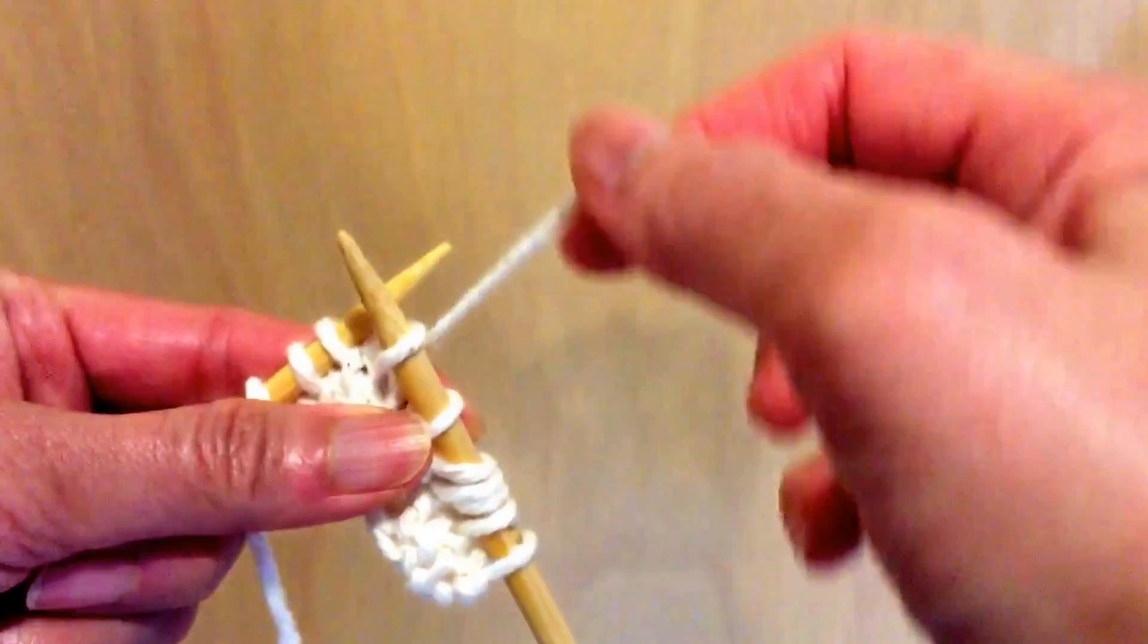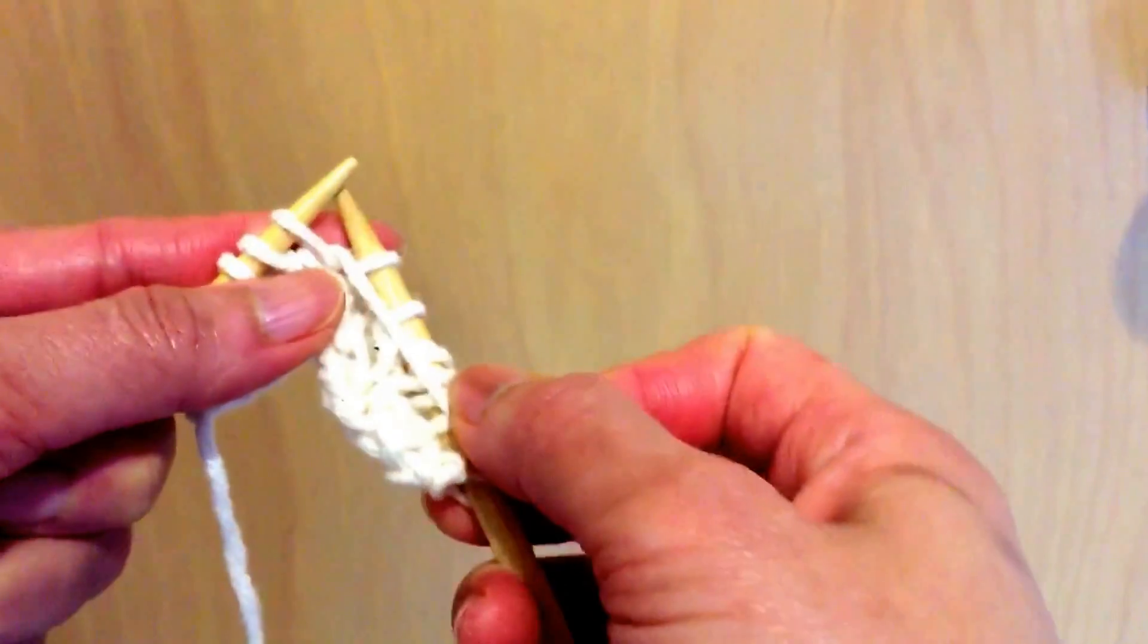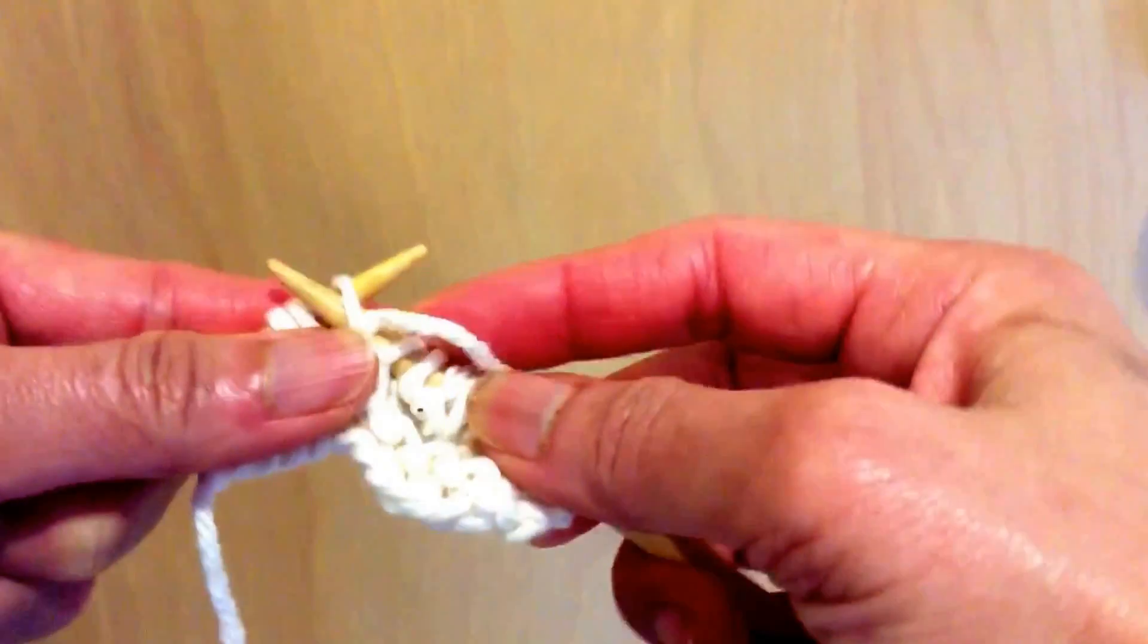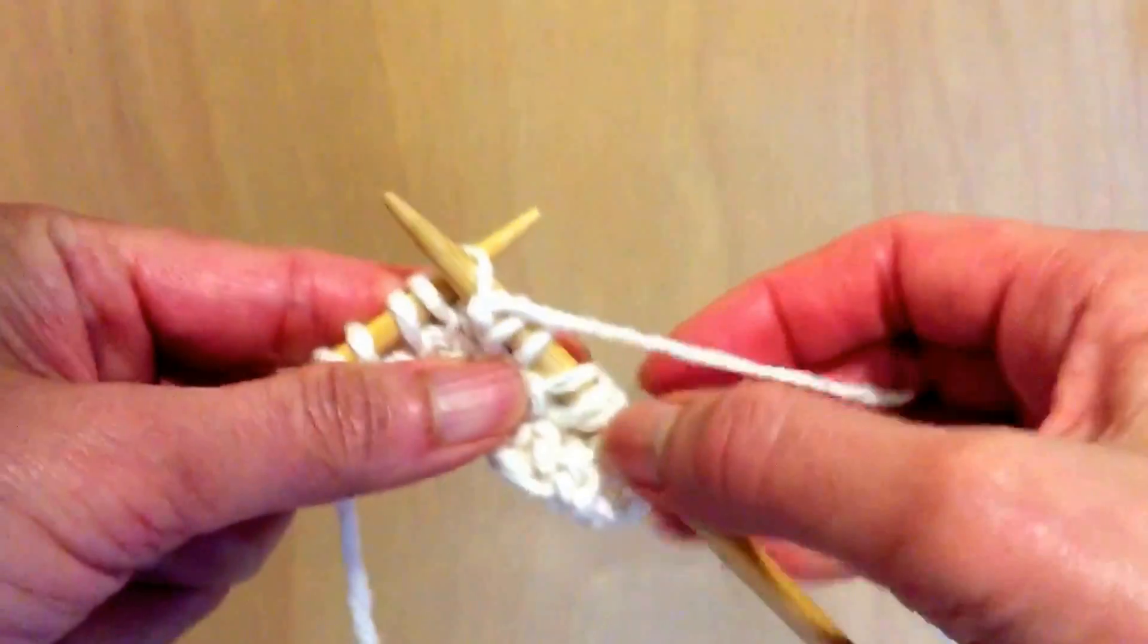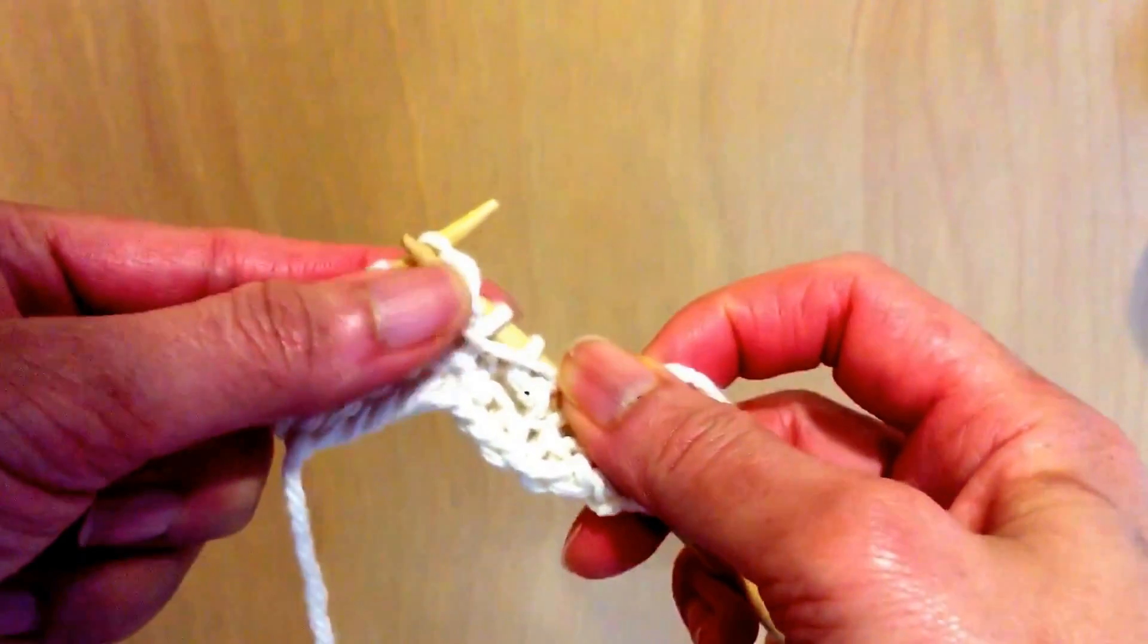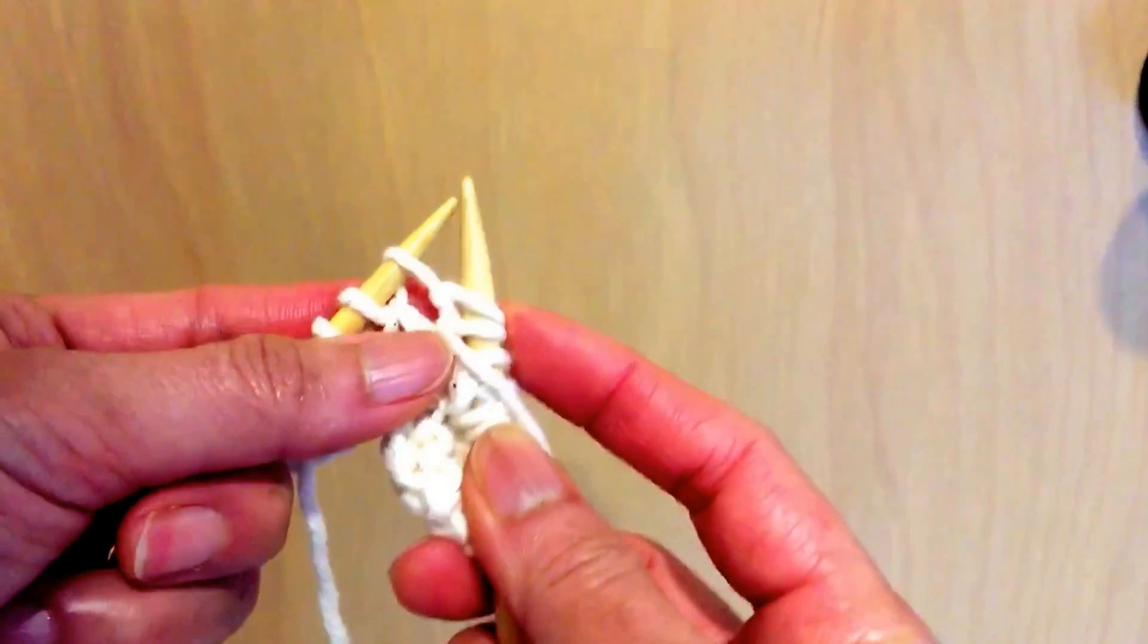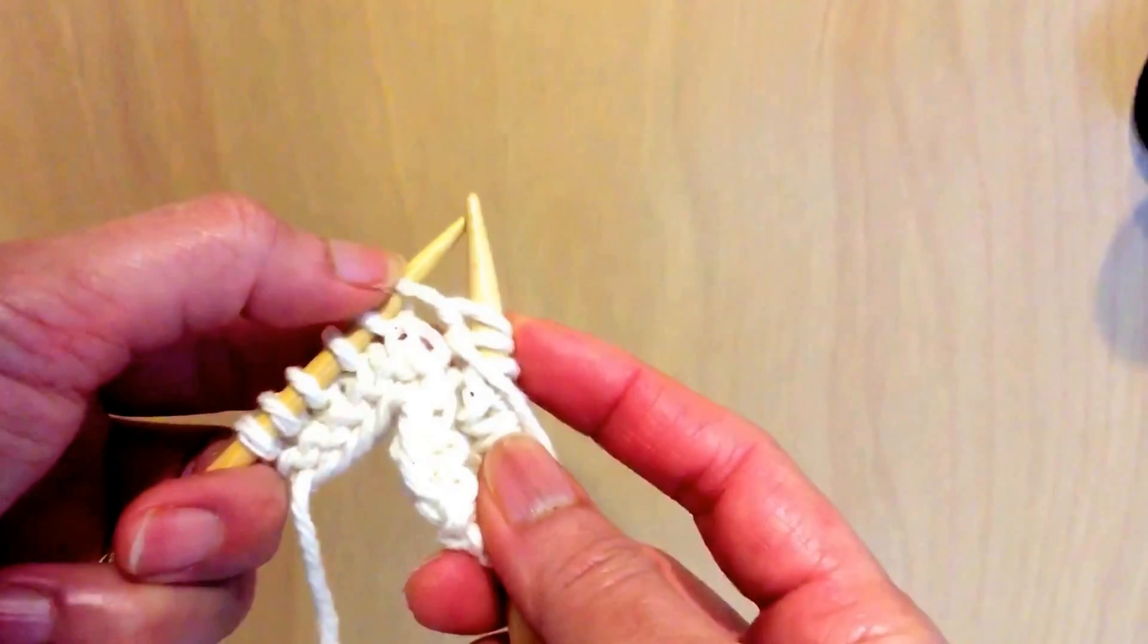And then you're going to do it again. And then you're going to bring the yarn toward the front because we're going to purl. And then purl the same stitch. Wrapping yarn. And purl. Don't slip it off the needle yet. The stitch is still here.